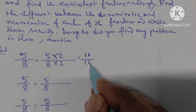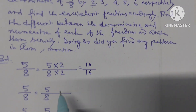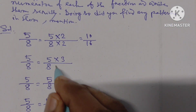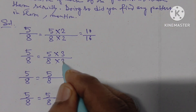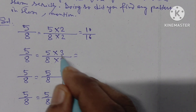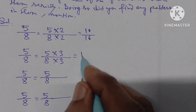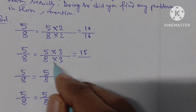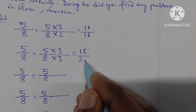Next, we have to multiply by 3. 3 times 5 is 15, 3 times 8 is 24. So the equivalent fraction is 15 by 24.